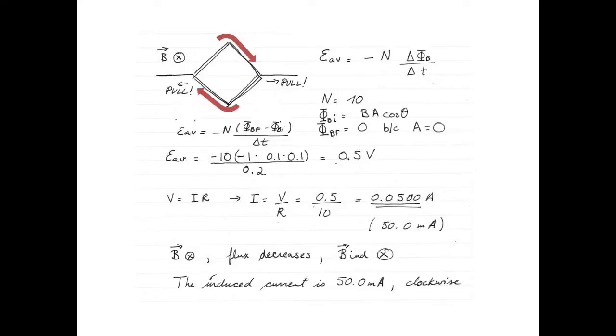To find the direction of the induced current, I put my right thumb in the direction of the induced field. So my right thumb is pointing into the computer screen. And I watch my fingers of my right hand. They are curling in the clockwise direction. So this tells me that the induced current is clockwise.